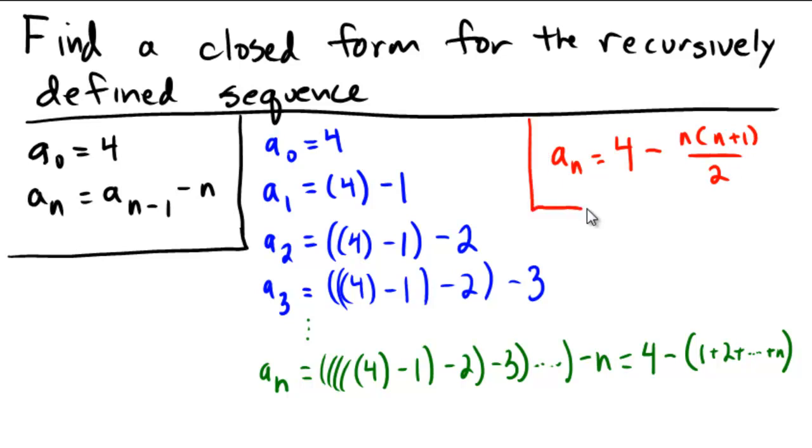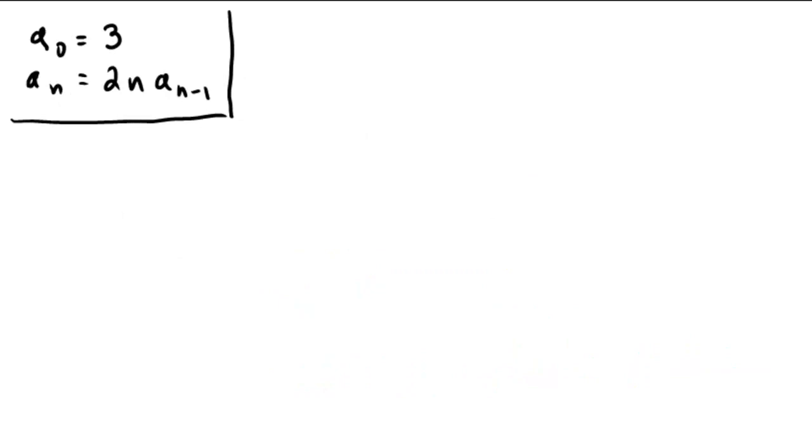So that's our final answer for the closed form. You can test it out if you wish, but that's the answer. So why don't you pause the video and see if you can do this next one on your own here. Try to do a sub 0 equals 3, a sub n equals 2 times n, times a n minus 1. Okay, assuming you paused and gave this a shot here, let's do it together.